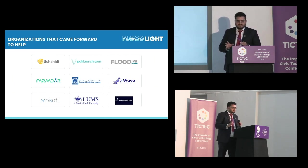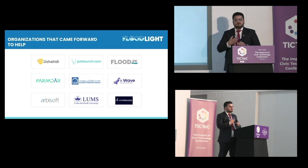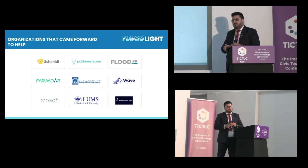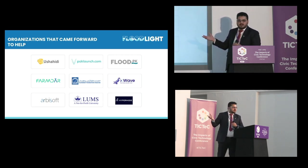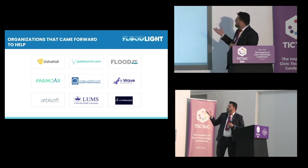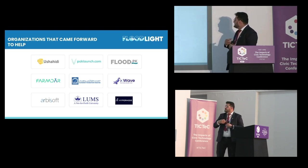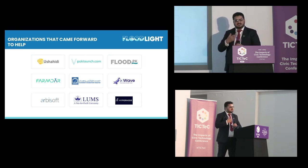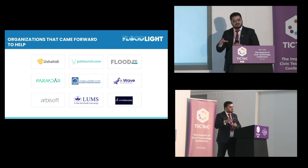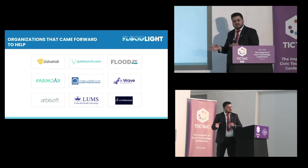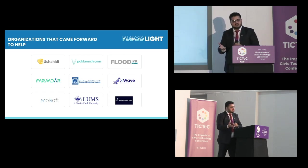None of this would have been possible without our partners. Ushahidi provided a lot of technical support. We had strong implementing partners on the ground in Parklaunch and Flood.pk, who boosted the platform on their websites so more people could reach out and we could get more volunteers. Farmdar was our mapping partner — they had satellite maps, and based on those we did analysis and compared it with Floodlight data to consolidate which were the hotspots where help was needed most.